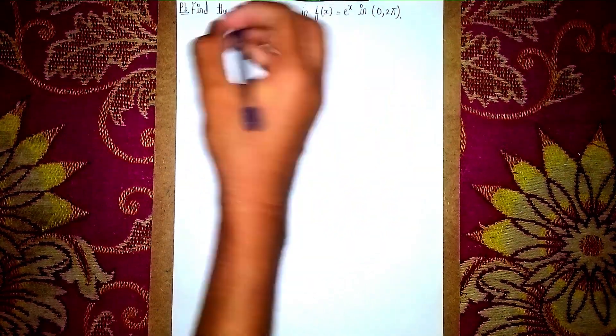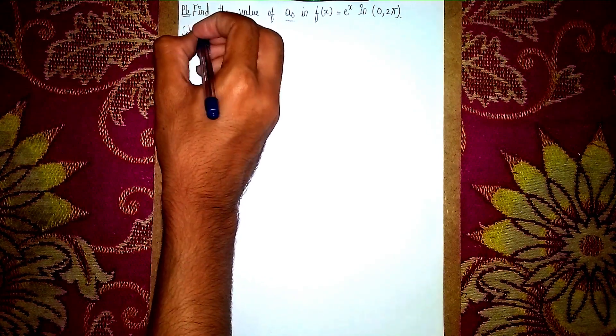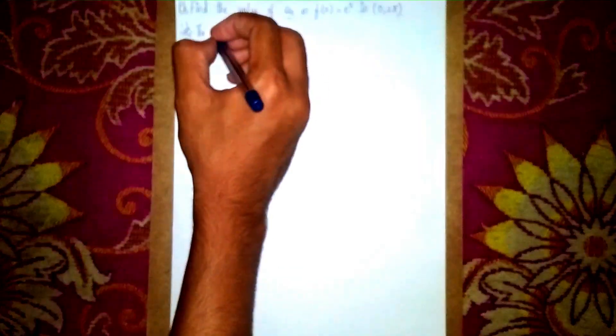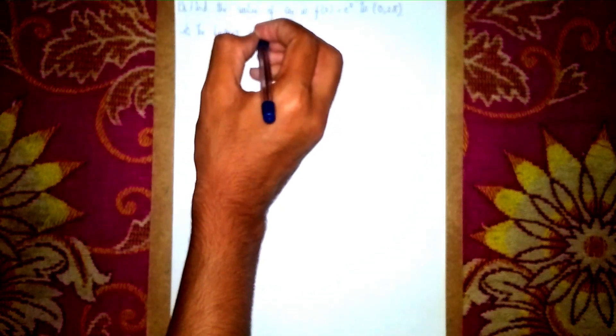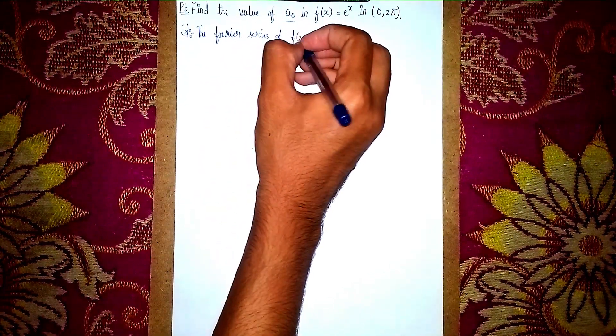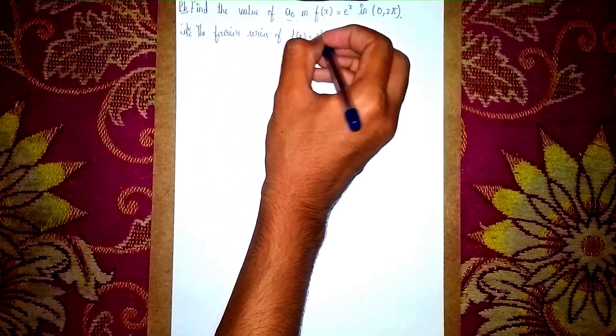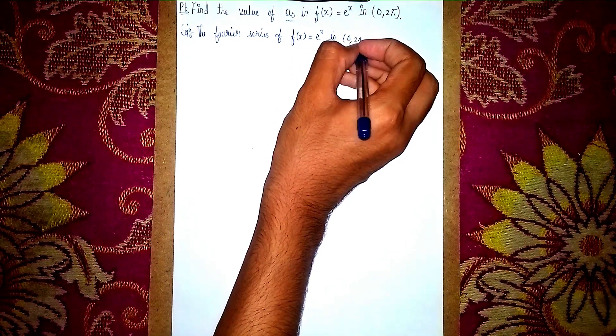First, write the solution. The Fourier series of f(x) = e^x in [0, 2π]. Write this statement.